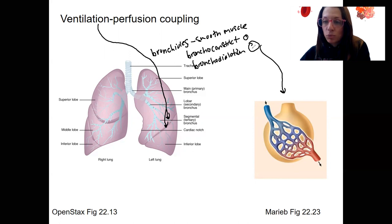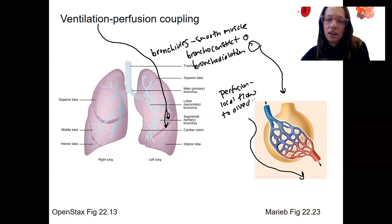So larger lumen increases ventilation. We want to match up this ventilation with the blood that's passing through the alveoli. This is called perfusion. Perfusion is talking about local blood flow to tissues. In this case, perfusion is local blood flow to the alveoli. So these two things we want to match up so that we have optimal gas exchange rates.